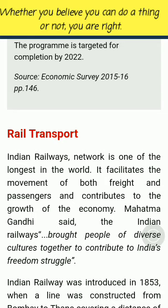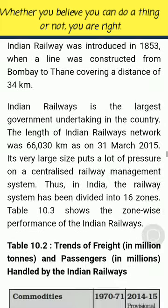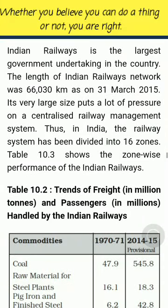Rail Transport: Indian Railways network is one of the longest in the world. It facilitates the movement of both freight and passengers and contributes to the growth of the economy. Mahatma Gandhi said the Indian Railways brought people of diverse cultures together to contribute to India's freedom struggle. Indian Railway was introduced in 1853, when a line was constructed from Bombay to Thane covering a distance of 34 km. Indian Railways is the largest government undertaking in the country, with a network length of 66,030 km as of 31st March 2015. Due to its large size, the railway system has been divided into 16 zones.